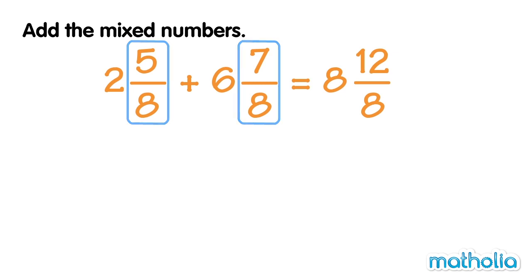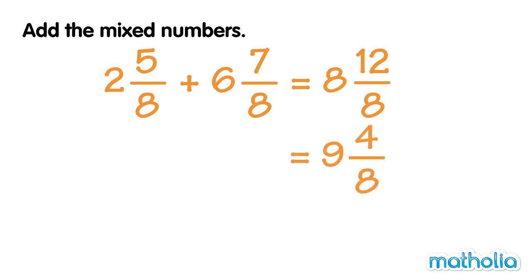12 eighths is an improper fraction. We can express it as the mixed number 1 and 4 eighths. Add the 1 to the 8 to give a whole number part of 9 and a fraction part of 4 eighths. We can simplify 4 eighths further — 4 eighths is an equivalent fraction of 1 half. So 2 and 5 eighths plus 6 and 7 eighths equals 9 and a half.